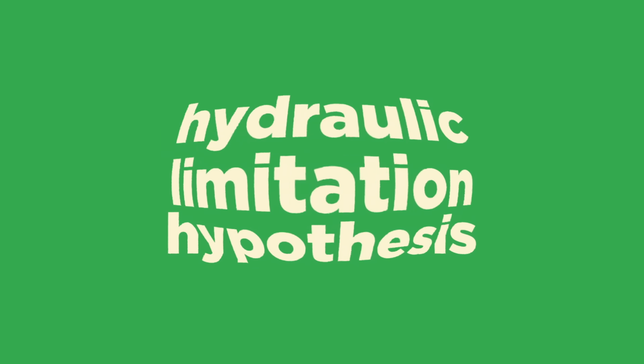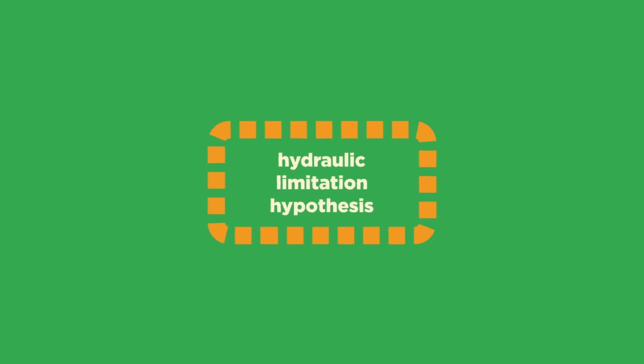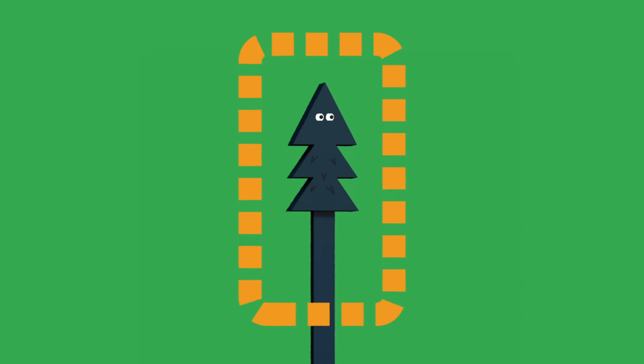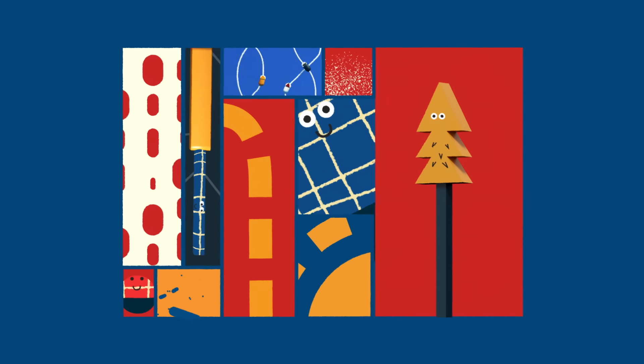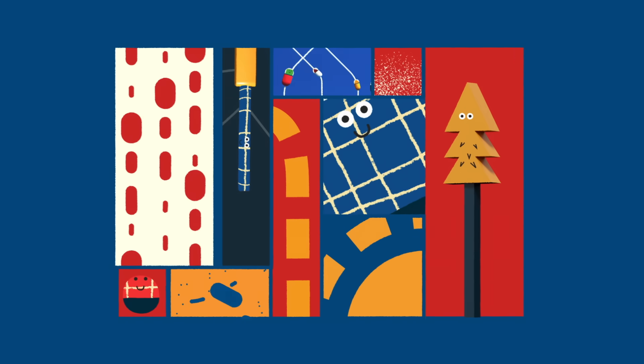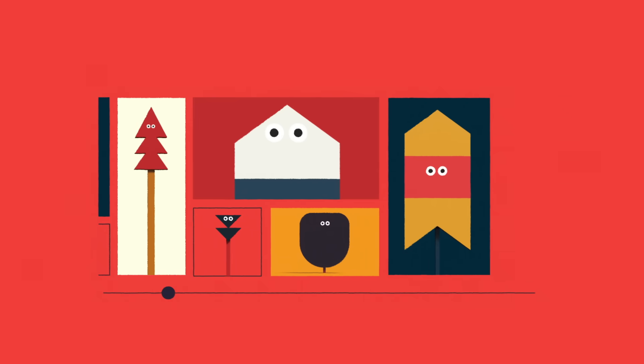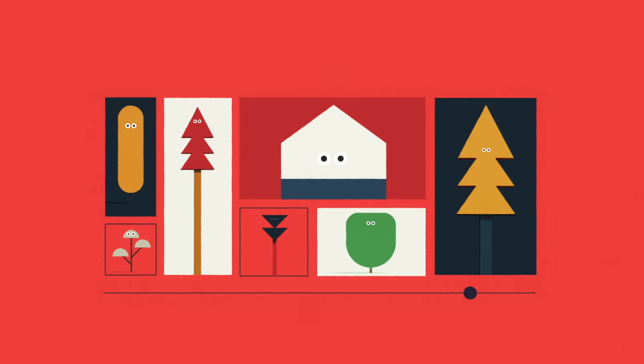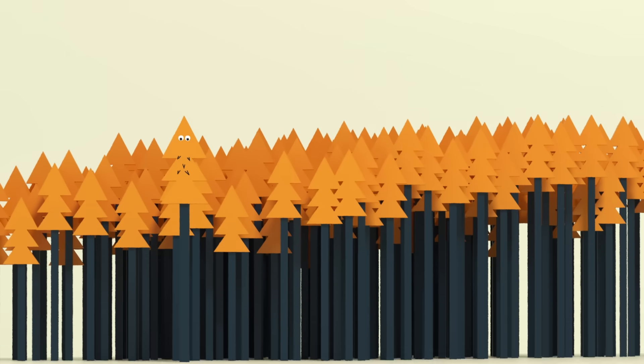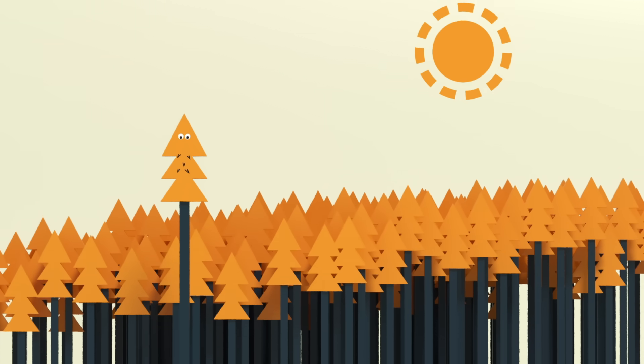This model, known as the hydraulic limitation hypothesis, is currently our best explanation for why trees have limited heights, even in perfect growing conditions. And using this model, alongside growth rates and known needs for nutrients and photosynthesis, researchers have been able to propose height limits for specific species. So far, these limits have held up. Even the world's tallest tree still falls about 15 meters below the cap.